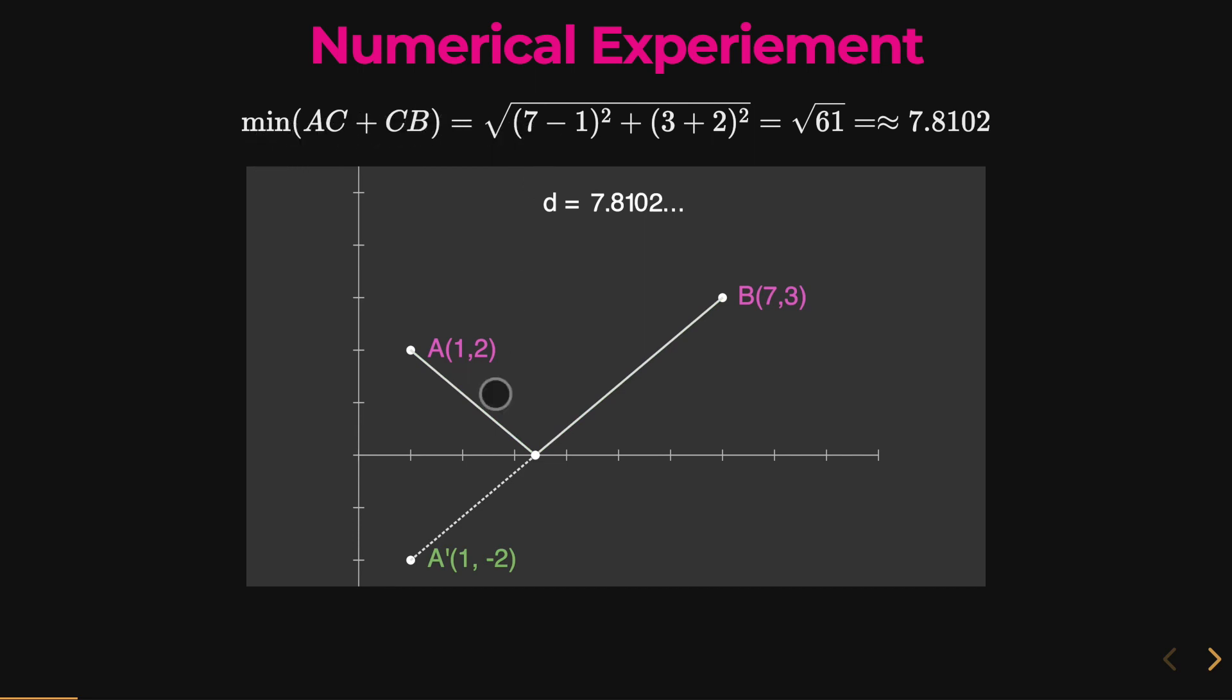So to find that, we can just simply use distance formula, and we will get somewhere around 7.8, and these two values are the same, so we can see that this is indeed our minimum.